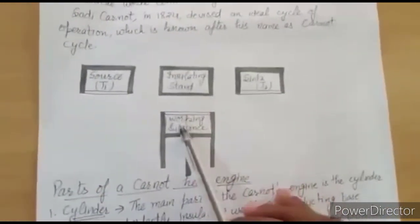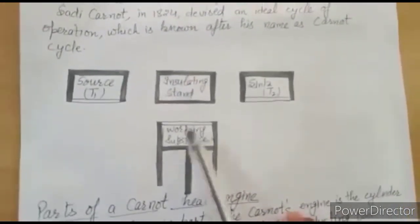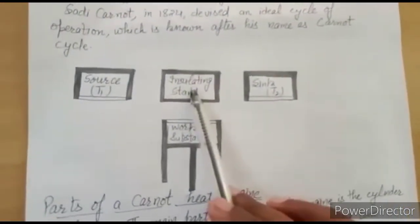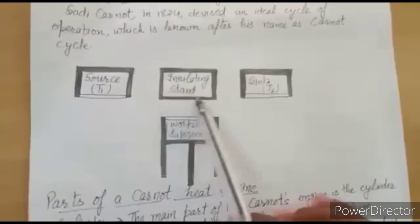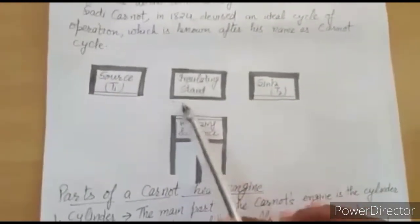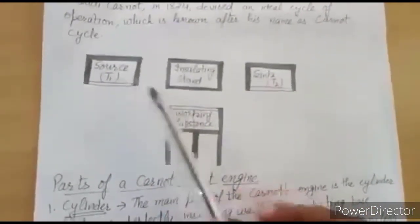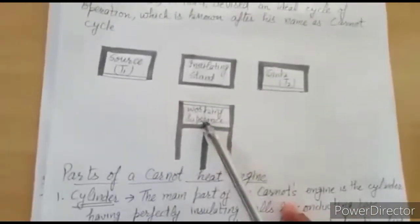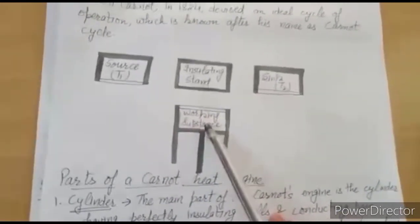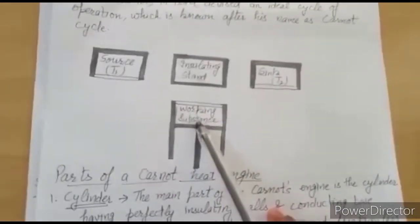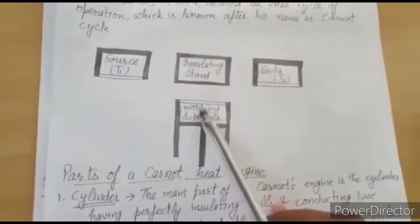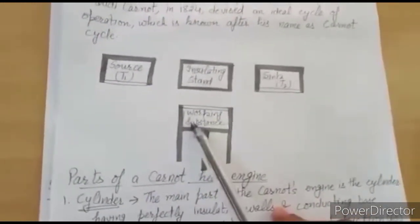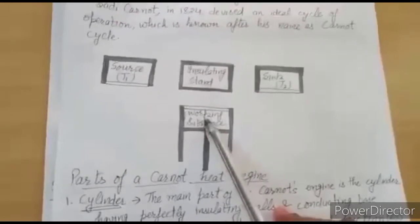In the second step, we place the working substance on the insulating stand. Since it is non-conducting, adiabatic expansion takes place — because the substance neither gives nor receives heat. No heat enters or leaves this system.